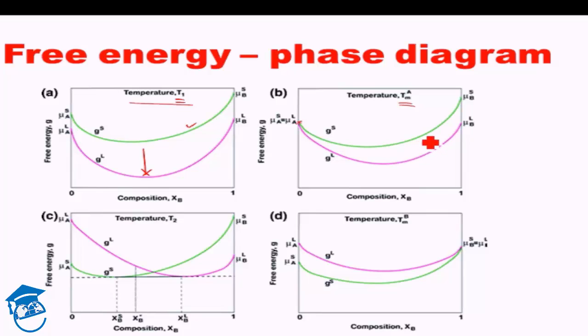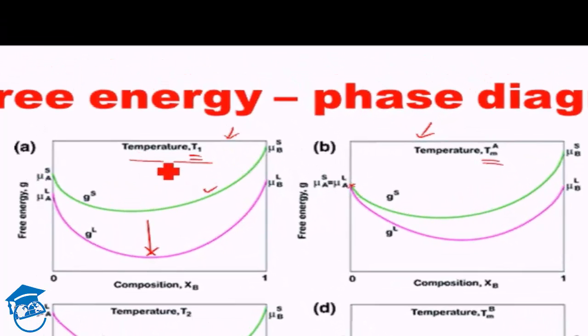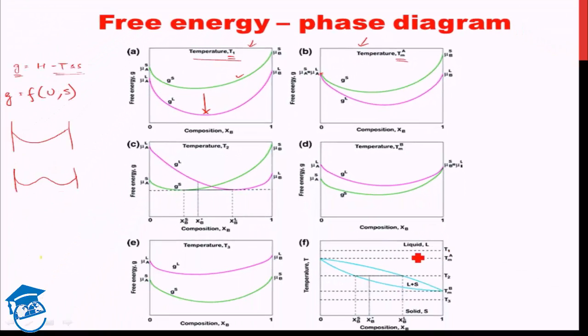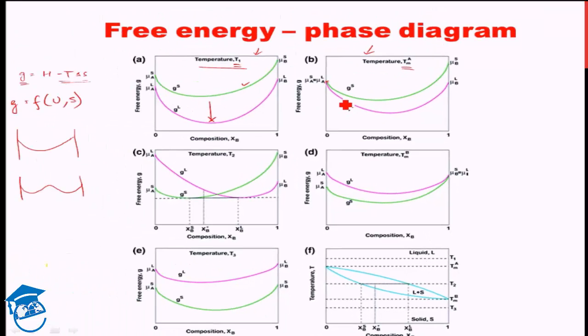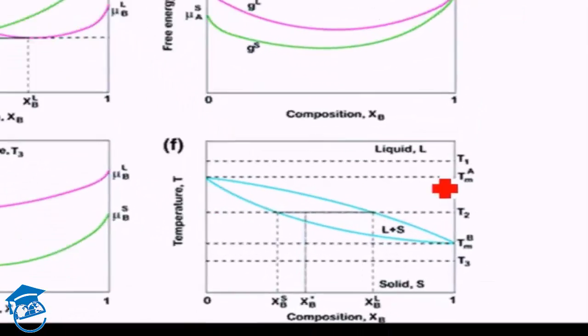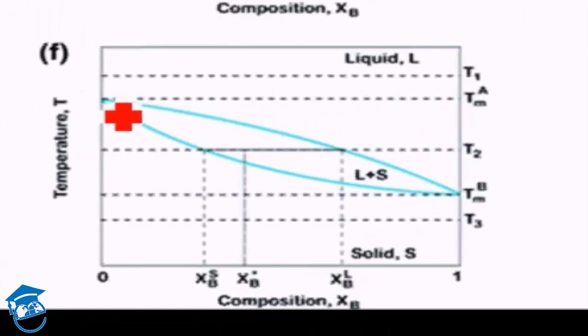Now let's see these two in the phase diagram. How do we draw? First this - at T1, all composition we have liquid. Now we are at TMA. At TMA, all composition except for 0% B is liquid. So everything till here is liquid. Over here we have the melting of A taking place, so we just have a meeting point here.